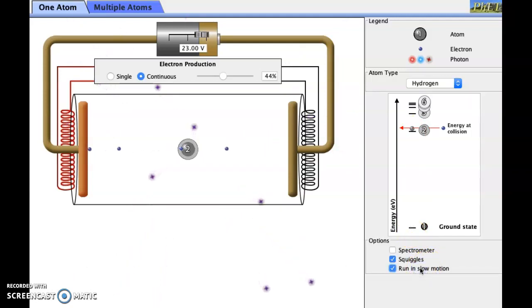Let's change this to slow motion and try to watch what happens here. When does the photon get released and how does that correspond to what's happening in this diagram. Try to understand in the energy level diagram what happens when a photon gets released.